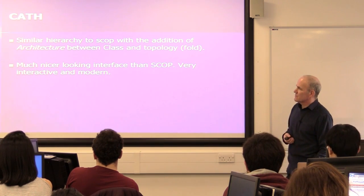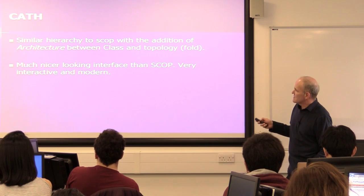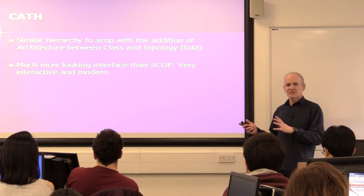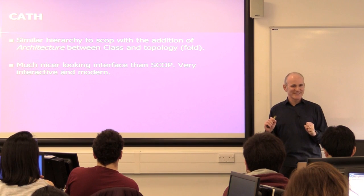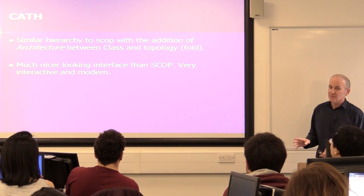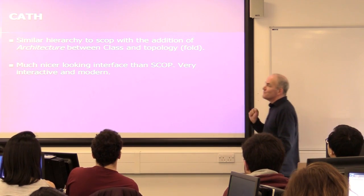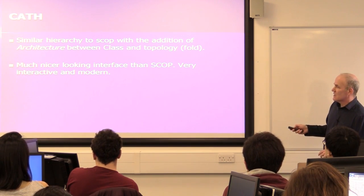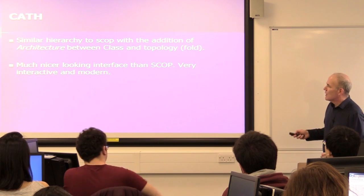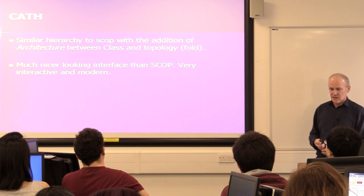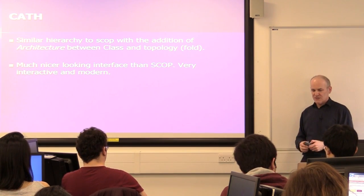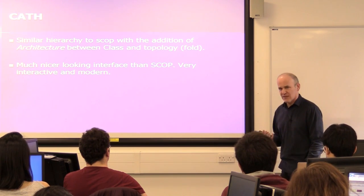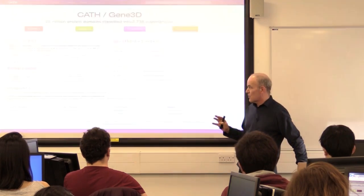CATH has a very similar idea but includes an extra level called architecture between class and topology. It also has a much nicer-looking interface using contemporary technology — it works on your phone as well, built with Twitter Bootstrap. It has some features not in SCOP, and I'll tell you about one of them.